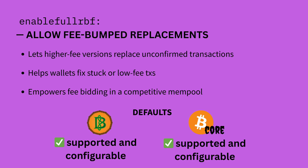Enable full RBF, or replace-by-fee, lets you speed up a stuck Bitcoin transaction by replacing it with a new one that pays a higher fee. Normally you would have to mark a transaction as replaceable ahead of time, but with full RBF you can bump the fee on any unconfirmed transaction. It's useful when the network is busy and your original fee isn't enough to get confirmed. Some people don't like it because it makes zero-confirmation payments less reliable — the kind merchants might accept instantly without waiting for a block to confirm.